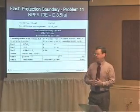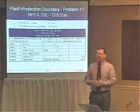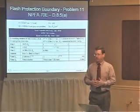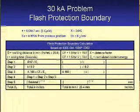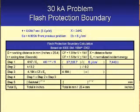Once you've had time to go over this, I'll come back and work through it together. You start out with 610 millimeters — that's based on the 24-inch normalized distance. Raise it to the X value of 1.641 and divide by 5 joules per square centimeter, which is the second degree burn threshold — we want to know where that boundary lies. That gives us 37,215 divided by 5 joules, which equals 7,443.